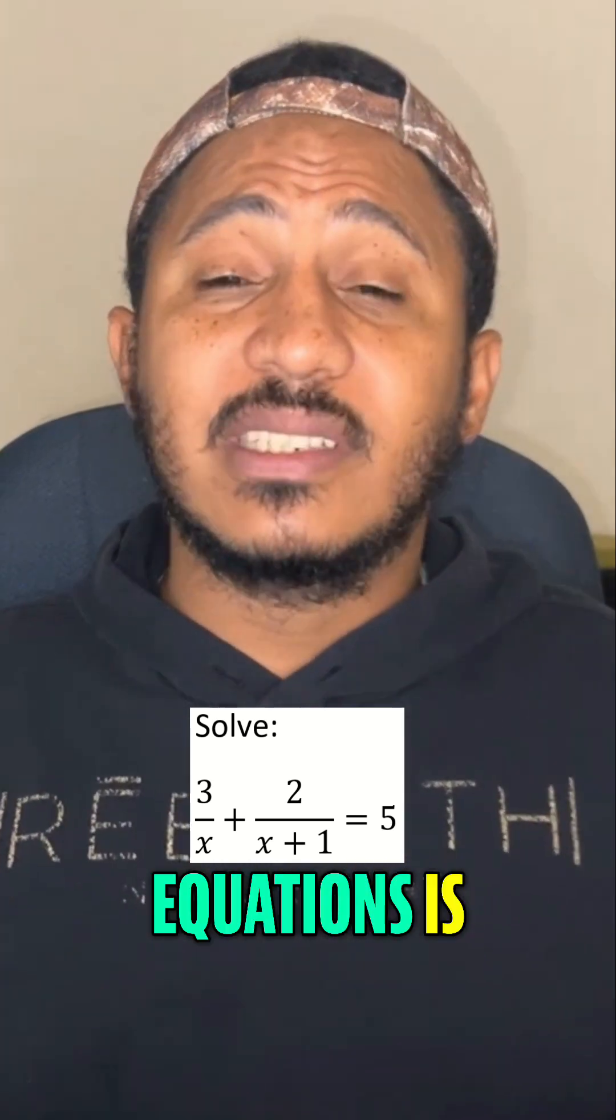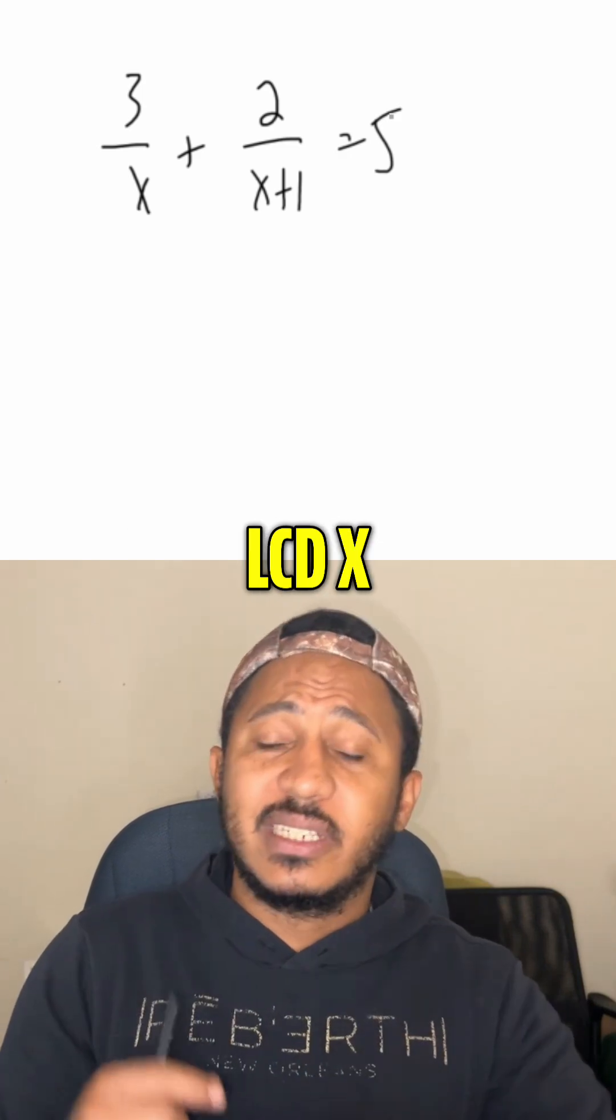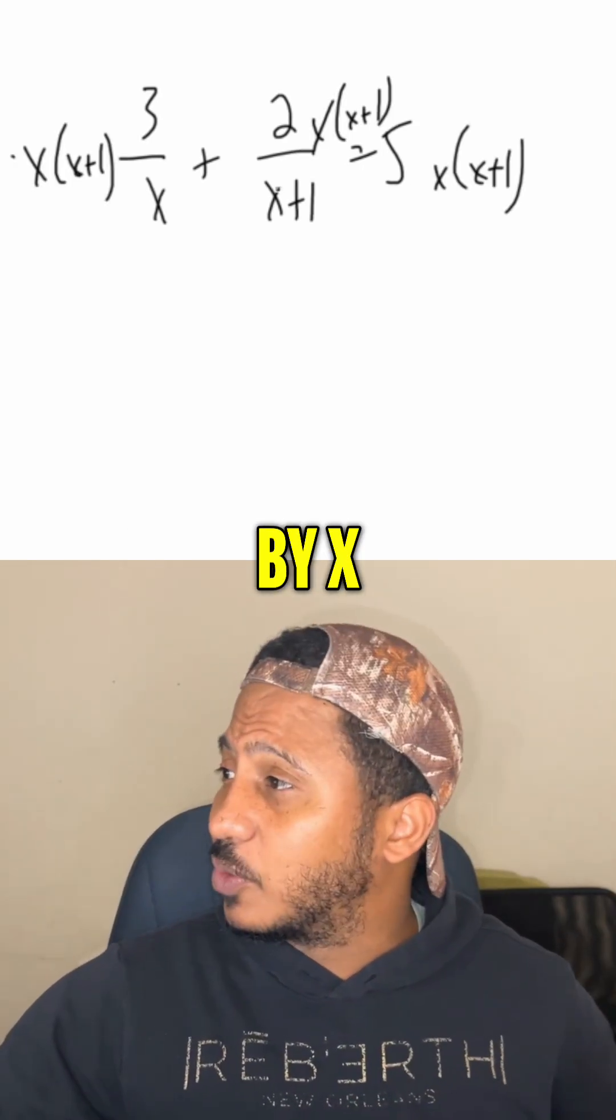How we solve rational equations is by getting rid of the fractions by multiplying by the LCD. Here we got x and x plus 1 as our denominators. That would be the LCD, x times x plus 1. So we're multiplying by x times x plus 1.